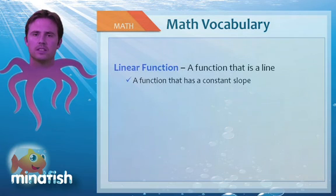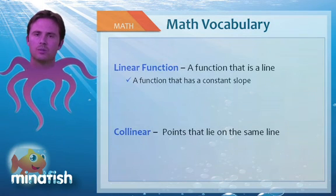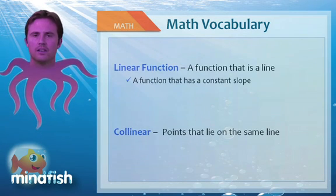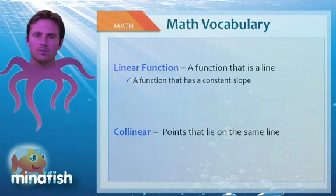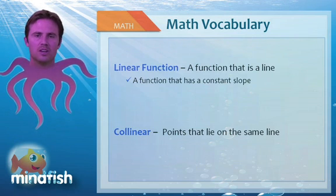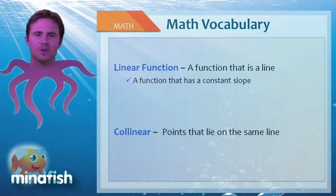Linear function means it has a constant slope. The term collinear means points lie on the same line. Knowing these terms is an important part of succeeding in math. Hopefully if you see a term now, you'll know how to use it correctly and get the problem right. Hope to see you soon.